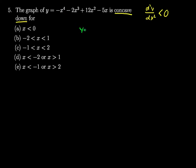We have y is equal to negative x to the fourth minus 2x cubed plus 12x squared minus 5x. There's our original function.